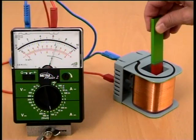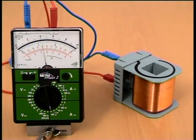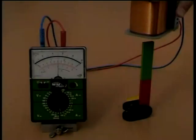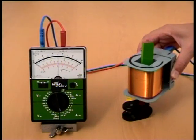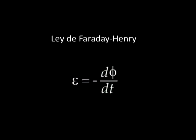La presencia de estas corrientes inducidas en la bobina implica la existencia de una fuerza electromotriz inducida, la cual está presente durante el tiempo en el que el flujo del campo magnético está variando. El flujo del campo magnético que atraviesa la bobina está relacionado con la fuerza electromotriz inducida mediante la ley de Faraday-Henry que establece que la fuerza electromotriz epsilon depende de la rapidez con la que varíe el flujo magnético phi.